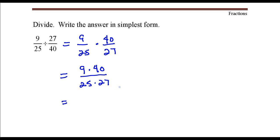We need to simplify this before we actually multiply. We're going to divide out factors common to both numerator and denominator. Nine goes into itself once and goes into twenty-seven three times. There is a greatest common factor of forty and twenty-five that we're going to divide out, and that's going to be five.